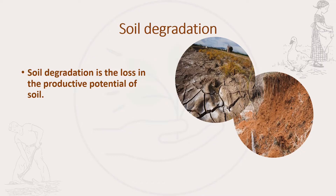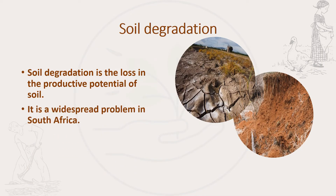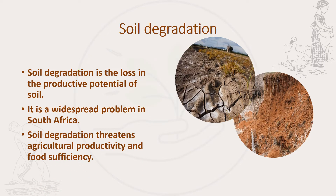Sometimes the condition of the soil changes and the soil loses its nutrients, and we call this process soil degradation. Soil degradation is the loss in the productive potential of the soil. This can be a result of human activities and is a widespread problem in South Africa because it threatens food availability and other agricultural activities.